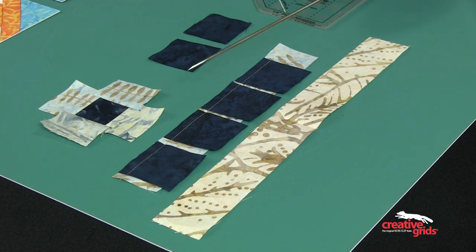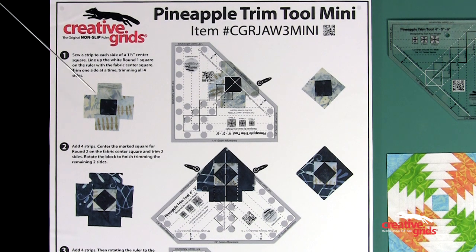To complete a round, sew a strip to each side of the center square. After all four strips in a round are stitched, press with an iron before trimming.